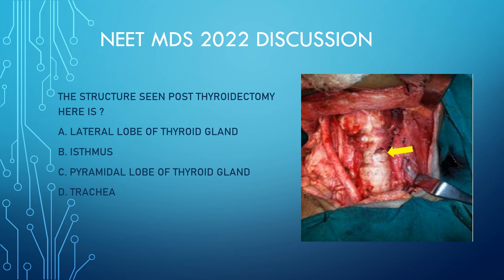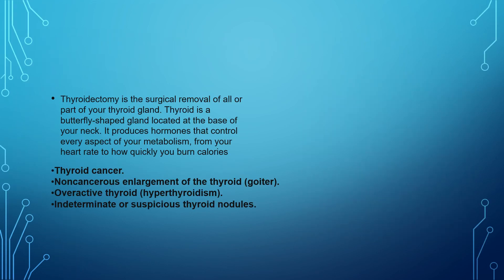Let us start with the first question. The structure shown here post-thyroidectomy — the options were: lateral lobe of thyroid gland, pyramidal lobe of thyroid gland, or trachea. We can clearly see that this is the trachea which has been shown and marked here.